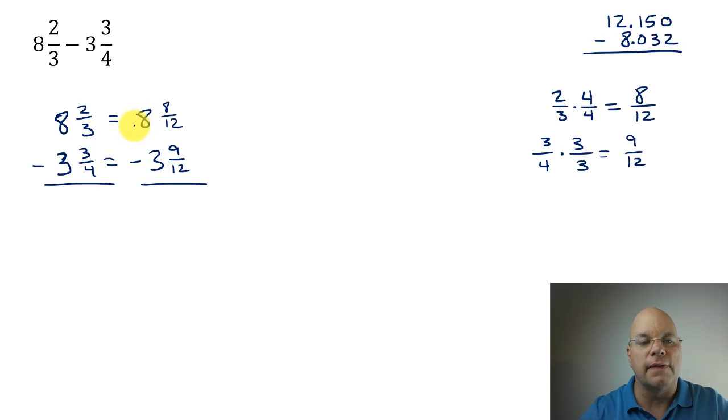There's plenty of twelfths to borrow from here in the eight. The eight is equal to 96/12, but I don't need that many. I just need to borrow one whole. Make the eight a seven. And by borrowing one whole, I've borrowed 12/12. Twelve-twelfths is one whole.